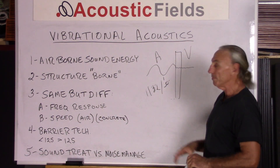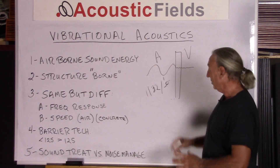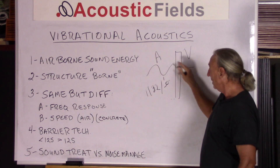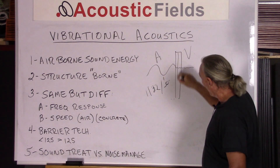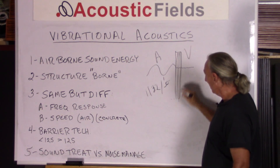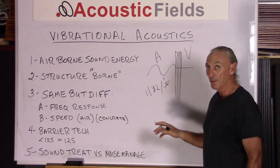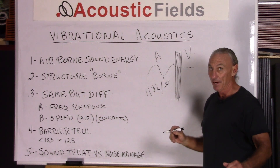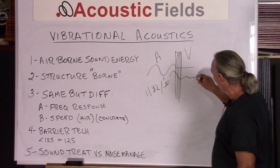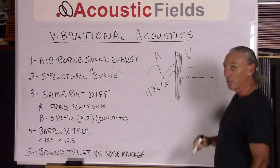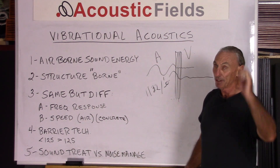Those two things are really important in constructing barrier technology. Barrier technology takes airborne energy, converts it to vibrational energy, and creates that conversion inside the barrier. It not only changes the signature and frequency response from the moment the energy hits the wall, but if you design the wall correctly, you can take a jagged signature and get it pretty smooth. The composition of the wall has a lot to do with the speed and frequency response of the signature.